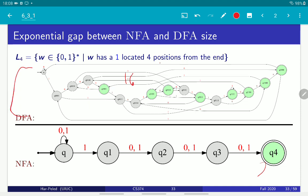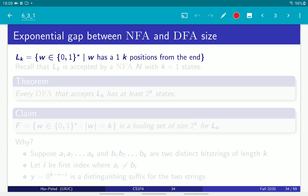Okay, so let's prove it formally. So the claim is, let's look at language L of K, which is the language of all binary strings such that the Kth bit from the end has a 1. And we already saw that an NFA can accept this with K plus 1 states.